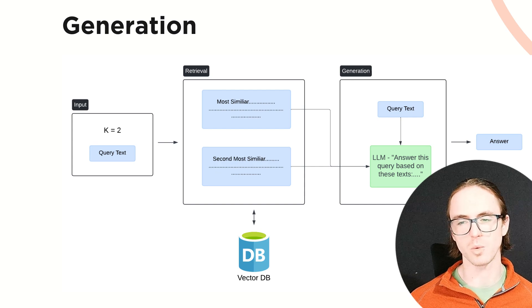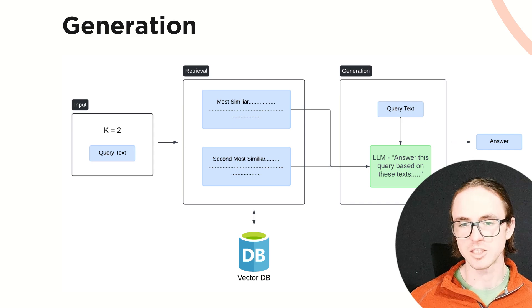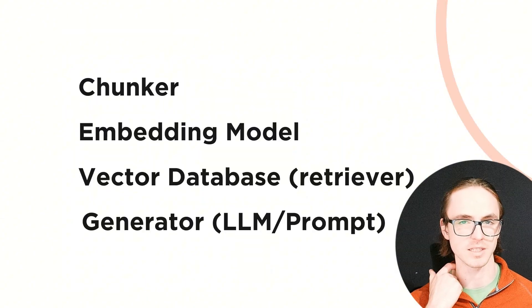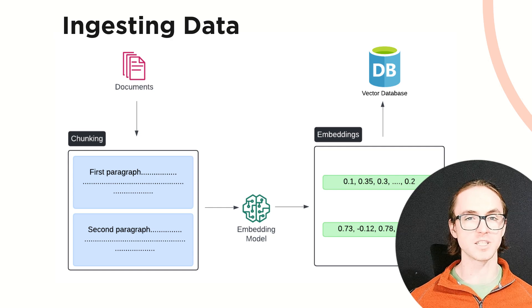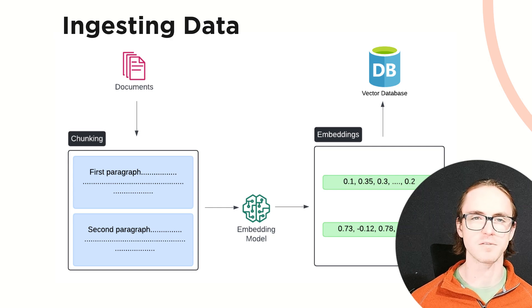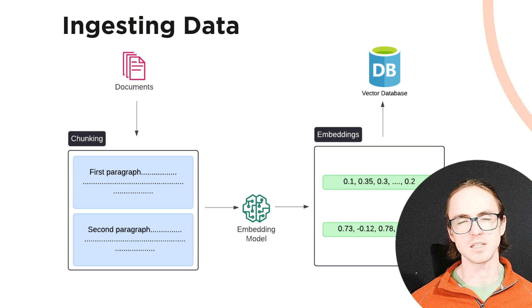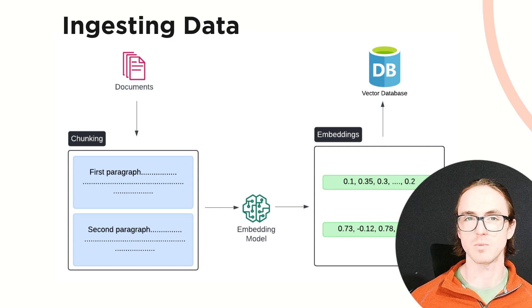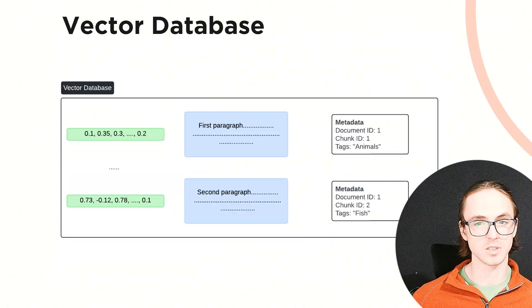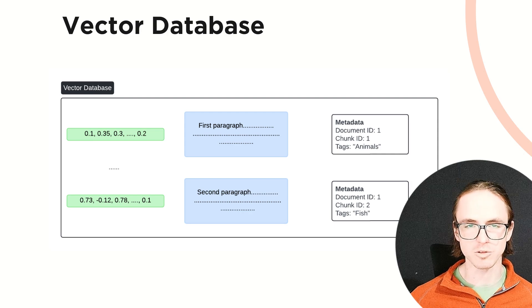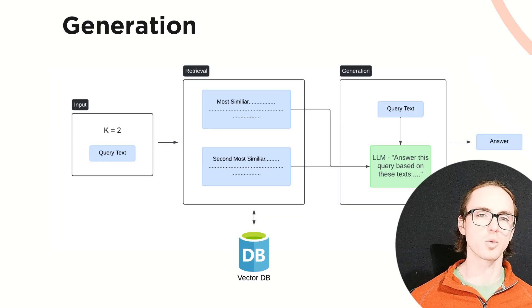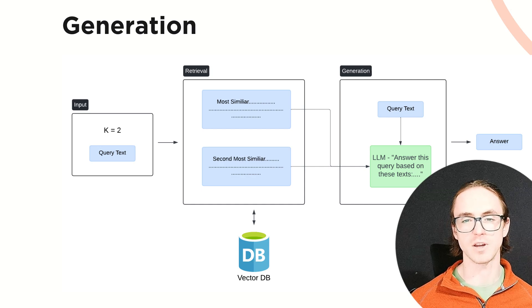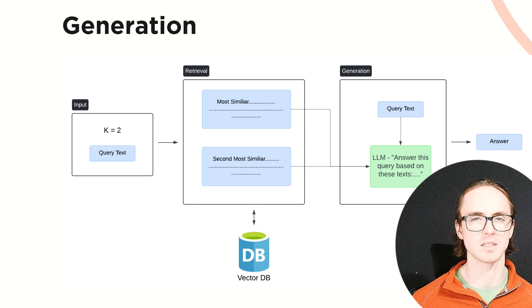That retrieved text is then combined with the original query and fed into the language model, which uses that information to answer your question. So that's fundamentally what RAG is. There are four key parts of a RAG system: your chunker, which splits input text into paragraphs; your embedding model, which converts those paragraphs into vectors; your vector database, which stores those vectors alongside the original text so you can query it; and your generator, the language model that takes the query and the retrieved paragraph and formulates a final answer for the user.